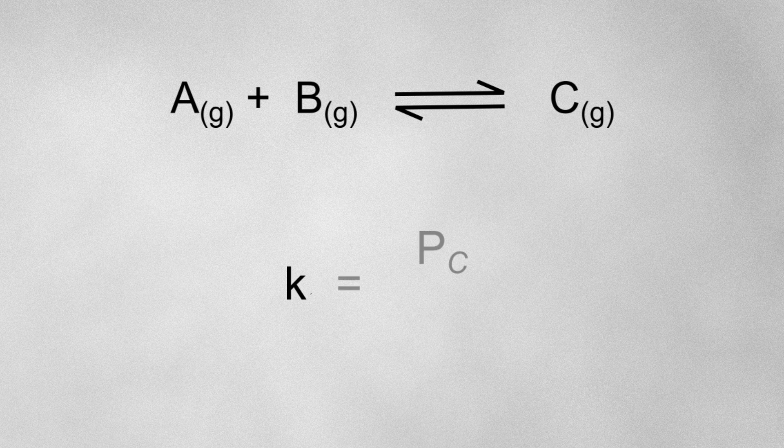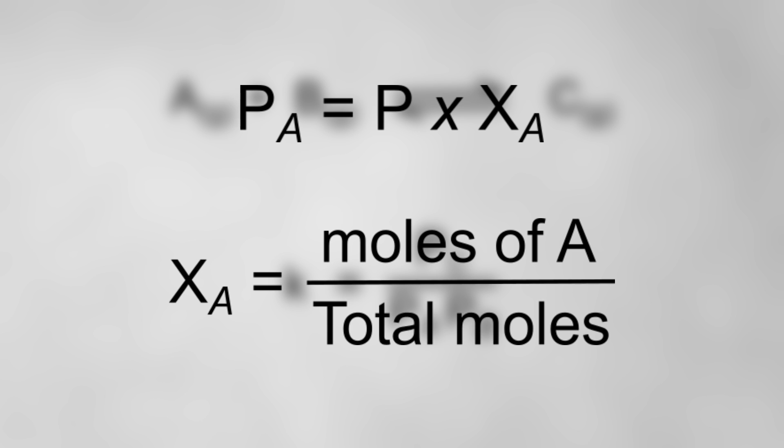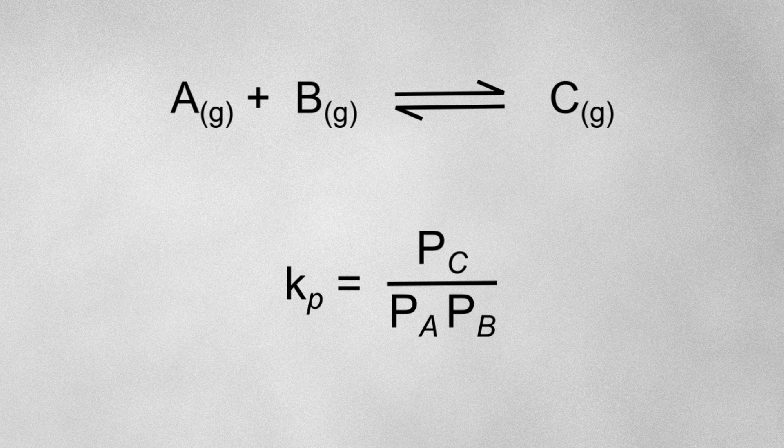If an equilibrium was set up in the gas phase, the equilibrium constant will be calculated in a slightly different way. We don't normally define a concentration for a gas; instead we use pressure. So the equilibrium constant is calculated as K equals the partial pressure of the products over the partial pressure of the reactants. The partial pressure of a gas is the pressure that that one gas would exert if it was the only gas in the container. We calculate the partial pressure by multiplying the total pressure by the mole fraction of that gas, which is the number of moles of that gas divided by the total moles of gas. Since this particular equilibrium constant uses partial pressures, we label it as Kp, where the p stands for pressure.